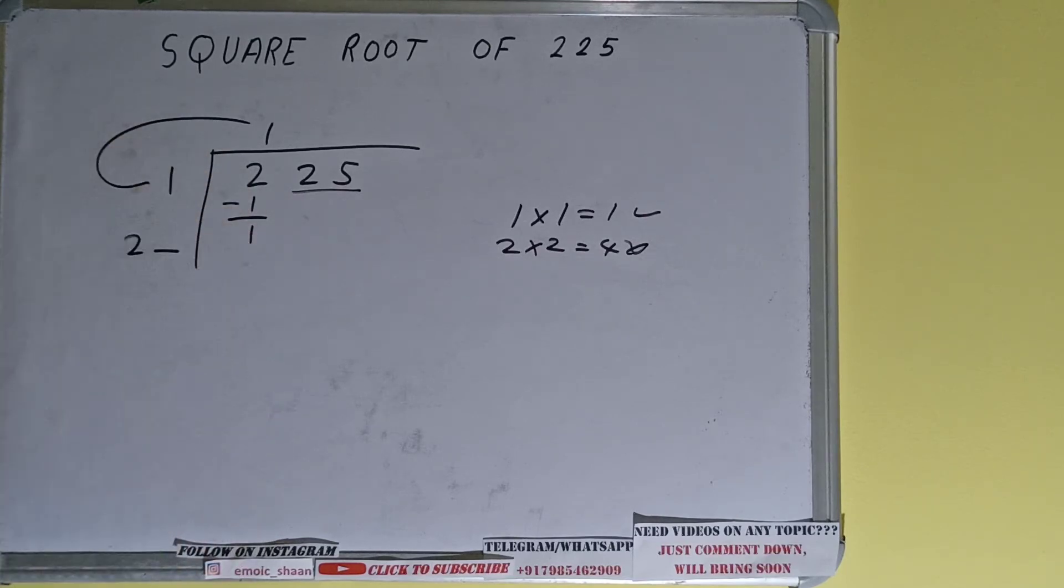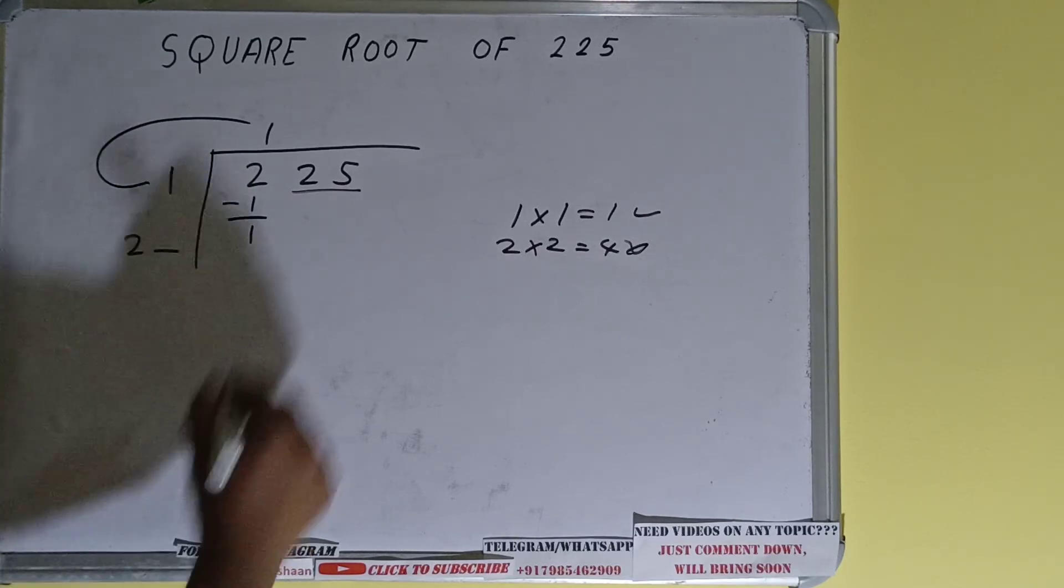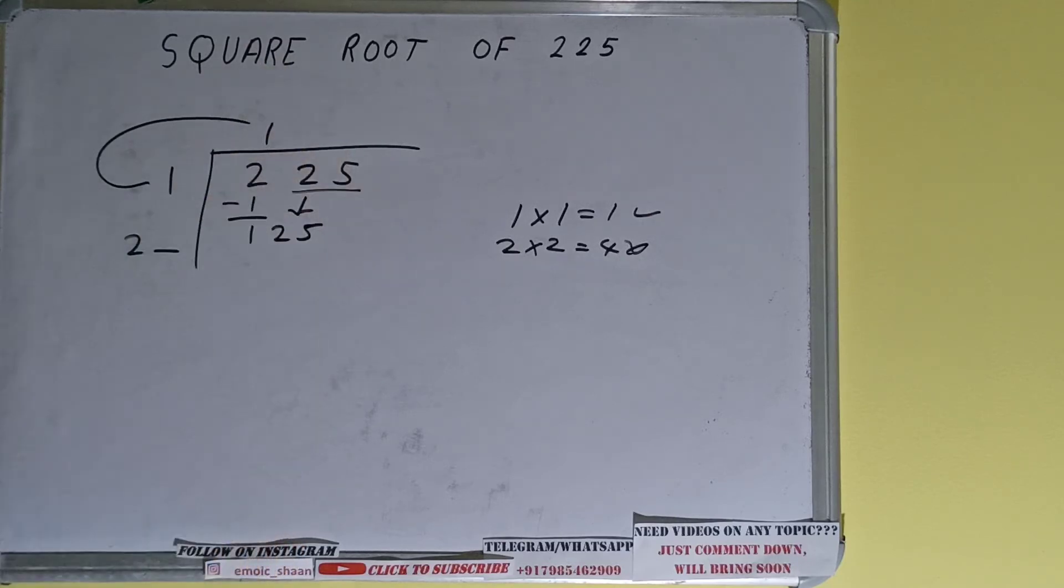We need to make this number big so that we can divide. So bring the next pair down and it will become as 125. Now we can try five times.